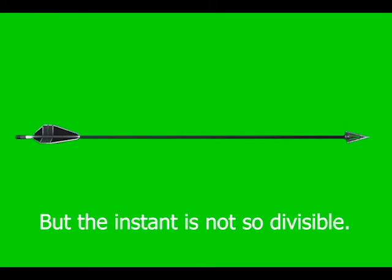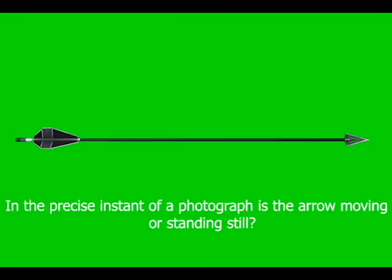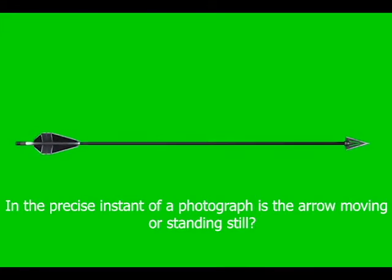But the instant is not so divisible. In the precise instant of a photograph, is the arrow moving or standing still?